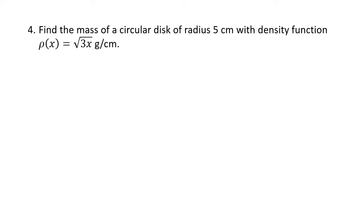Another radial density problem, same basic idea, again, same basic formula. The mass here is going to be the integral from 0 to r of 2 pi times x times rho of x. In this case, my rho function is square root of 3x. And the radius is 5, so we're going to integrate from 0 to 5, 2 pi x times square root of 3x.